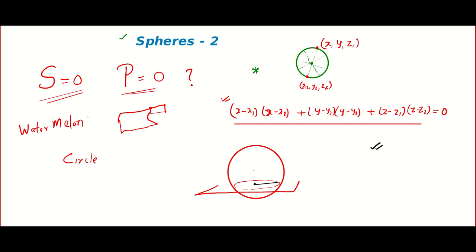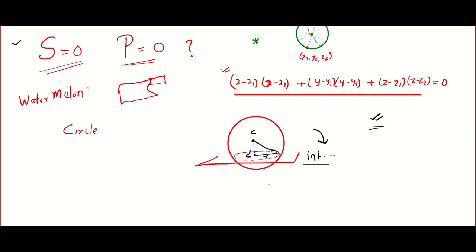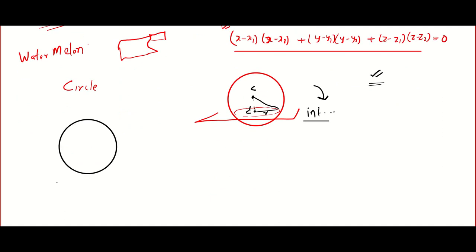Another possible question is they will ask you to find something using the relation between the center of the sphere, center of the circle, radius of the sphere, and radius of the circle. That is called the intersection condition of a sphere and a plane. Another type of problem is they will ask the condition so that a plane will become tangent to a sphere.